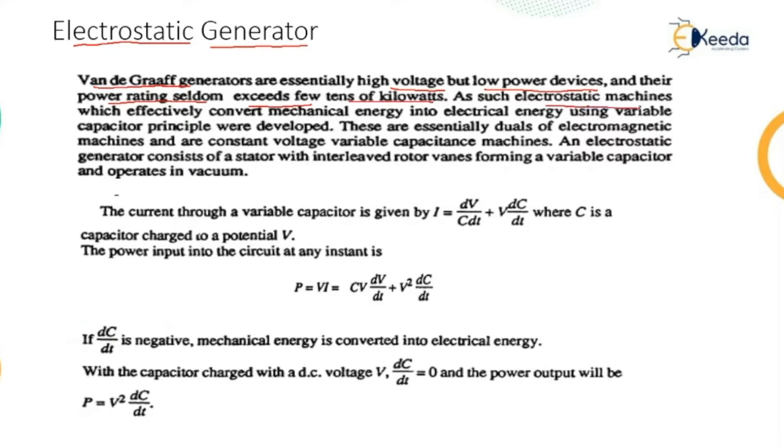Electrostatic machines are very effective for the conversion of mechanical energy into electrical energy using variable capacitor principle. These are essentially duals of electromagnetic machines and are constant voltage variable capacitance machines.